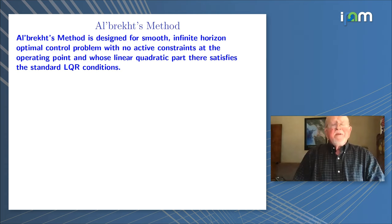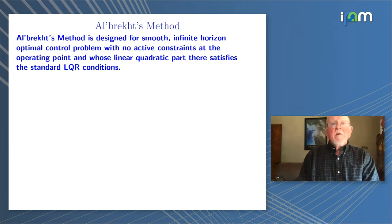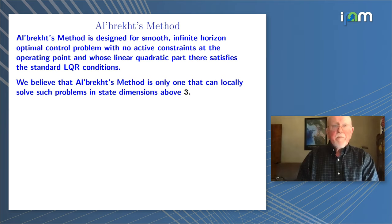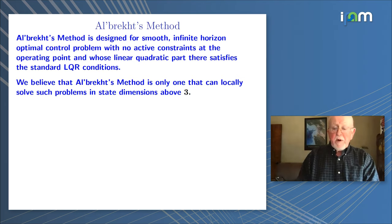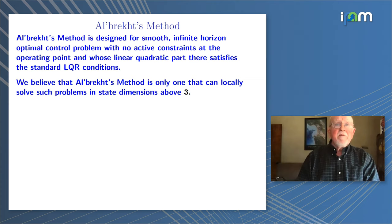Albrecht's method is designed for a special class of problems: smooth, infinite-horizon optimal control problems with no active constraints at the operating points and whose linear quadratic part satisfies the standard LQR conditions. The nice thing about Albrecht is it works, and it works in dimensions higher than 3. To my knowledge, there are no other methods for this class of problems that can guarantee a pretty good local solution on a relatively large domain in dimensions above 3.